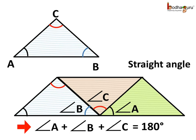Thus, angle A plus angle B plus angle C is equal to 180 degrees which proves the sum of angles of the triangle ABC is 180 degrees. You know, we can verify this with any triangle.